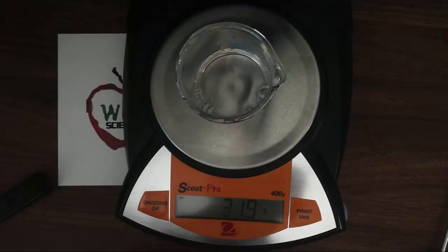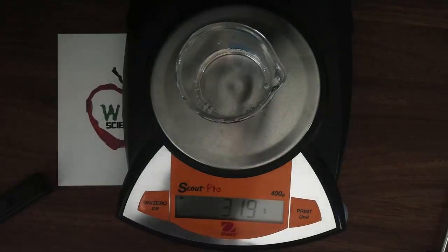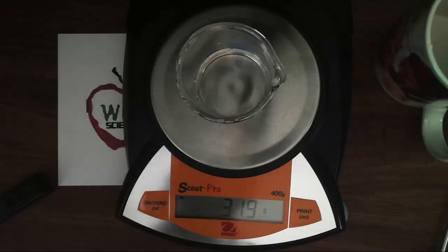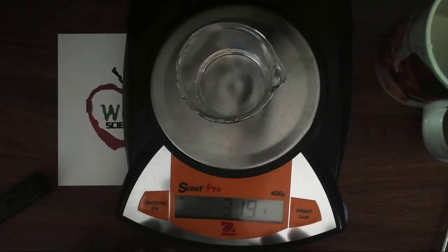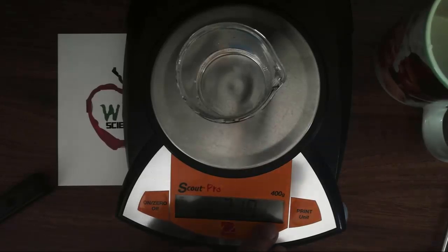And this gives us 31.9 grams of water. So this is another quantitative data, or measurement. So again, this is a quantitative observation, which is also a measurement that has a number and a unit. G, which is gram.